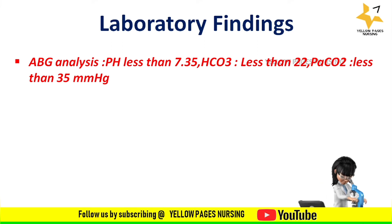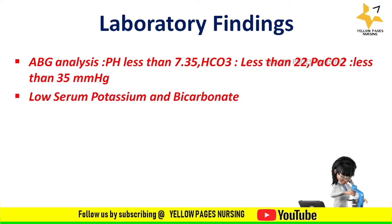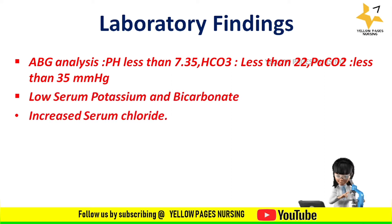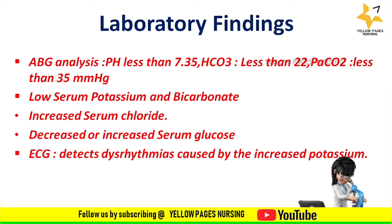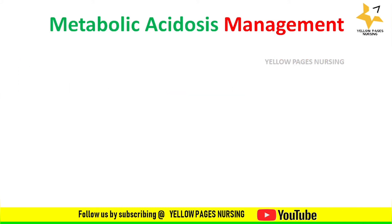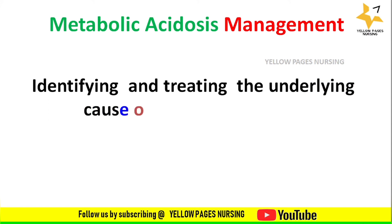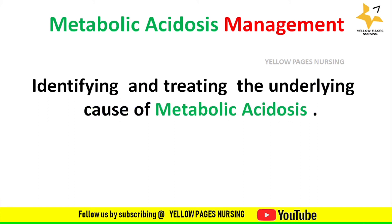Laboratory findings for metabolic acidosis include ABG analysis showing pH less than 7.35, bicarbonate less than 22, and PaCO2 less than 35. There is also a low serum potassium and bicarbonate level, increased serum chloride level, decreased or increased serum glucose, and changes in ECG which detect dysrhythmias caused by increased potassium.